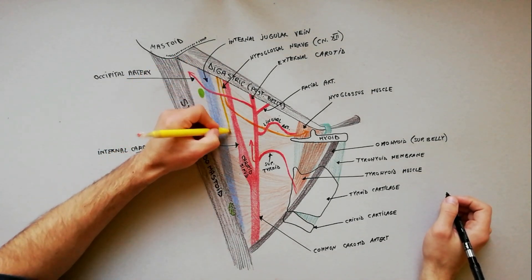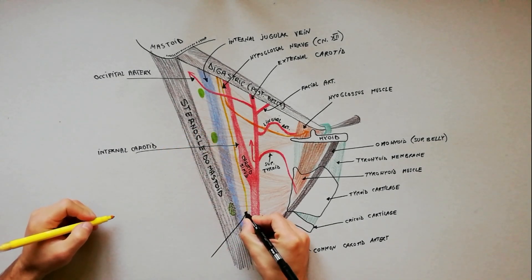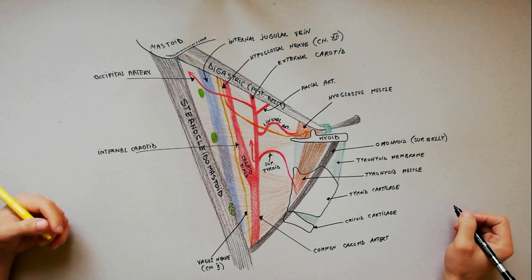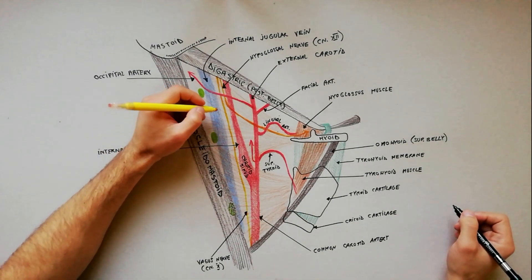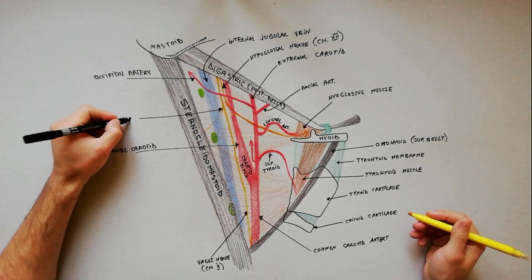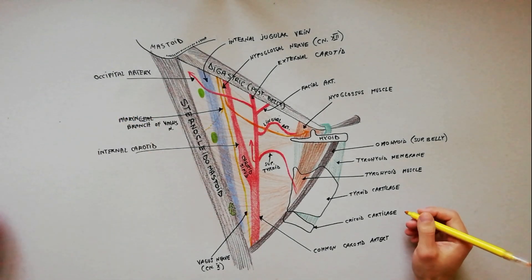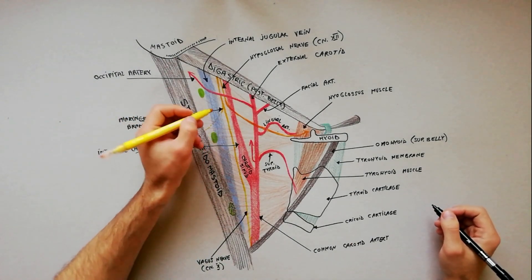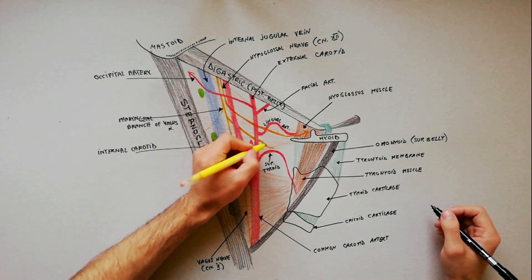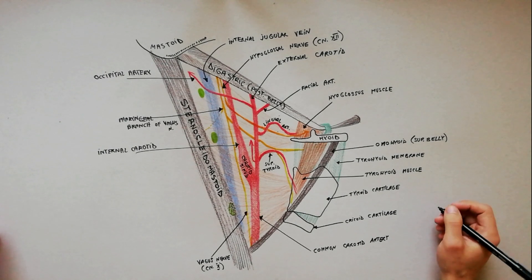The hypoglossal nerve loops off the lingual artery to run on the hyoglossus muscle above the hyoid bone. The vagus nerve descends vertically downwards, first between the internal carotid artery and internal jugular vein, and then between the common carotid artery and internal jugular vein. It gives two branches in the carotid triangle: the pharyngeal branch, which runs inferomedially between the external and internal carotid arteries to join the pharyngeal plexus; and the superior laryngeal nerve, which runs on a deep plane, deep to both internal and external carotid arteries, where it divides into internal and external laryngeal nerves.